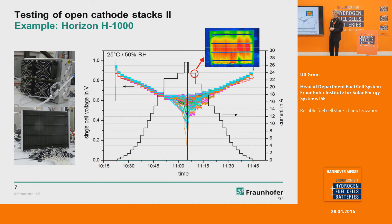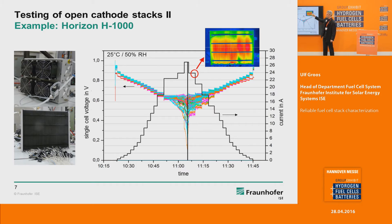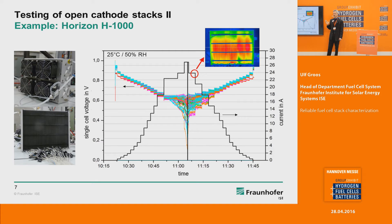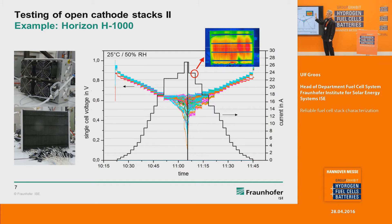To achieve homogeneous operating conditions for each cell, we did measurements with another stack — in this case a Horizon stack. You see a typical polarization curve of this stack, which we matched with infrared imaging, giving us an image of the temperature distribution within the stack. What's special with this stack is that the cells are vertically oriented. You see not only a temperature difference from cell to cell as with the Ballard stack, but also a huge temperature difference within the cell itself — meaning some regions may be drying out while others may flood due to low temperature and condensation.